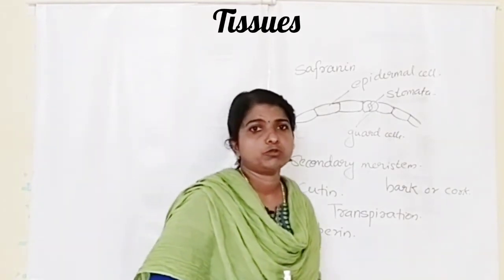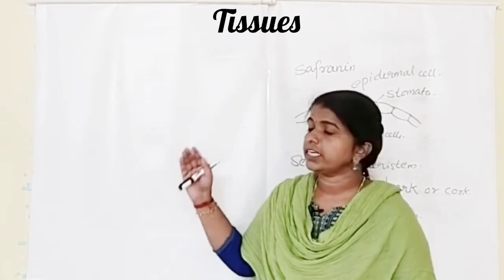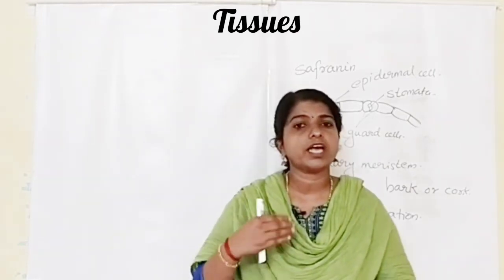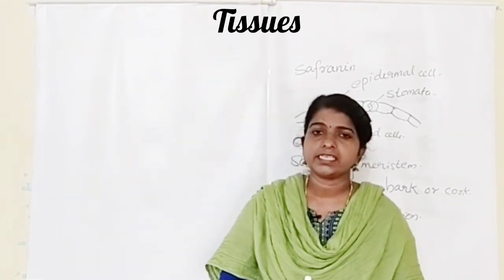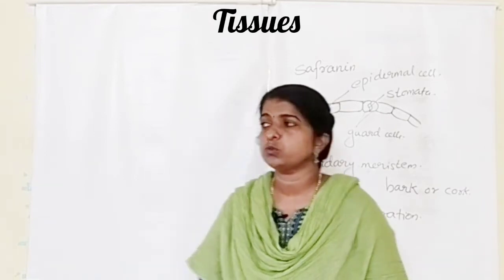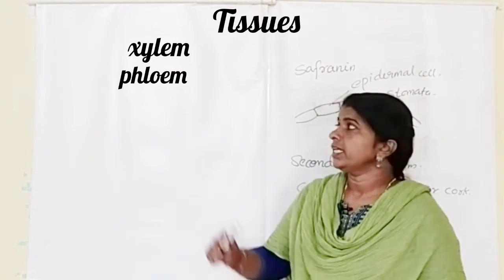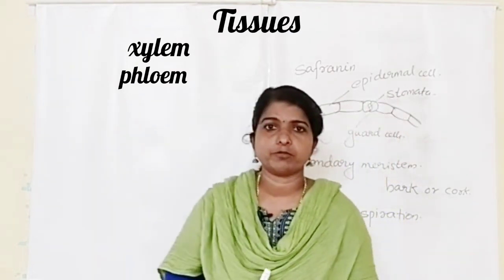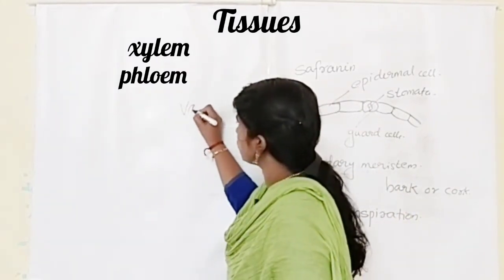Now we can move to the next part — complex permanent tissue. Simple permanent tissue consists of only one type of cell, but in the case of complex permanent tissue, different types of cells are there — more than one type. In plants, there are two complex permanent tissues: xylem and phloem. Both xylem and phloem together are known as vascular bundles.